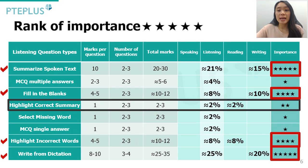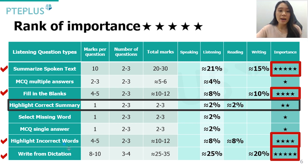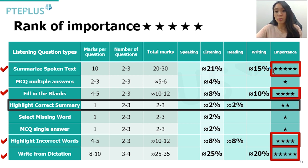The top four question types you should be preparing most for are: Summarize Spoken Text, Fill in the Blanks, Highlight Incorrect Words, and Write from Dictation. Write from Dictation and Summarize Spoken Text have very high exam question repetition rates — questions from practice often come up in the real exam. Preparing fully for those gives you a strong chance at that 21 percent, and they also contribute 15 to 20 percent to your writing score.